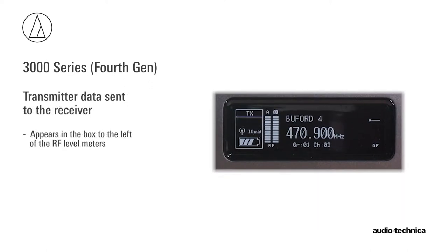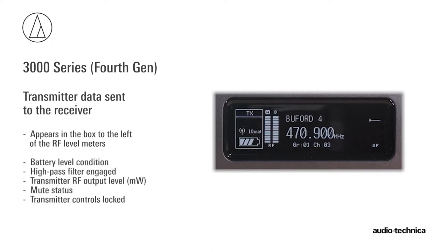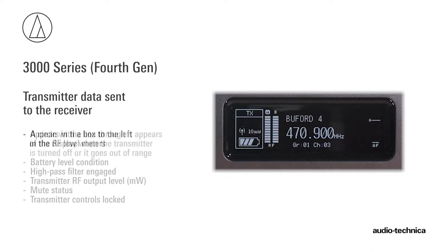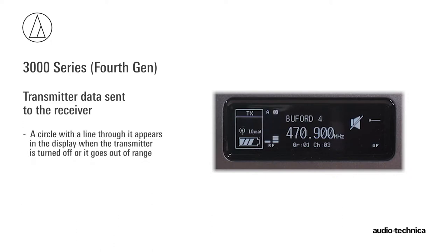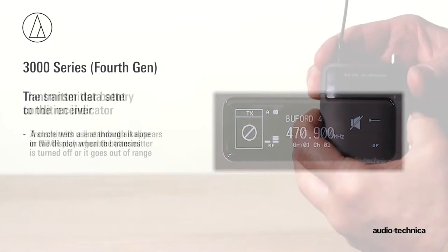Transmitter data shows up in the box to the left of the RF meters. Battery condition, transmitter output settings, and lock and mute status appear here. When the transmitter is turned off or goes out of range, a circle with a white line appears in the display.